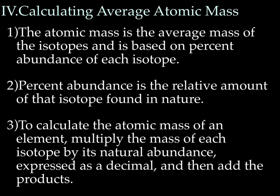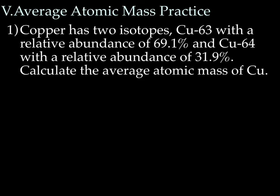All right, let's learn how to calculate average atomic mass. Let me start by saying this sounds really complicated. It sounds really tricky. And the truth is, it's really not. So if you start to stress out listening to this, just relax. It's not nearly as bad as it sounds. All right, here we go. The atomic mass is the average mass of the isotopes and is based on the percent abundance of each isotope. Percent abundance is the relative amount of that isotope found in nature. So to calculate the atomic mass of an element, multiply the mass of each isotope by its relative natural abundance, expressed as a decimal, and then add the products. That may sound super complicated, but it completely is not.